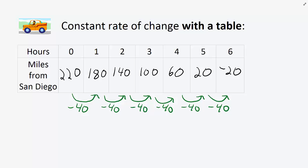The table shows us that after driving 40 miles per hour for five hours, he's only 20 miles from San Diego. After six hours, he's gone 20 miles past San Diego.